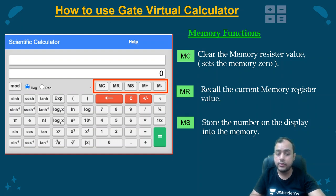So guys, today what we will be discussing are these functions at the top of the calculator: MC, MR, MS, M plus, M minus. What is MC? MC is clearing the memory register value. Whatever data has been stored in the memory earlier, if you need to clear it, you will use the MC function.